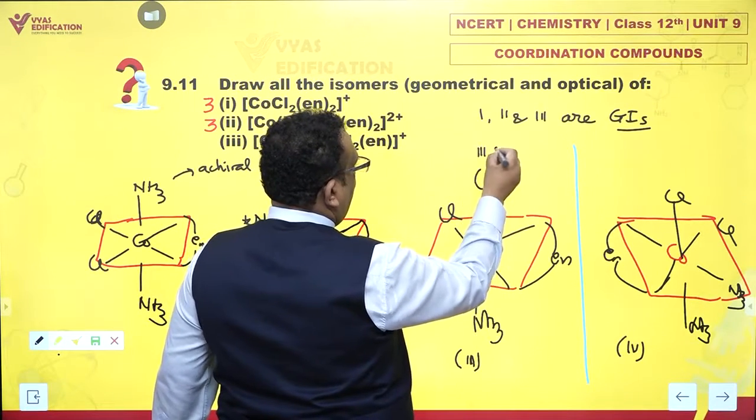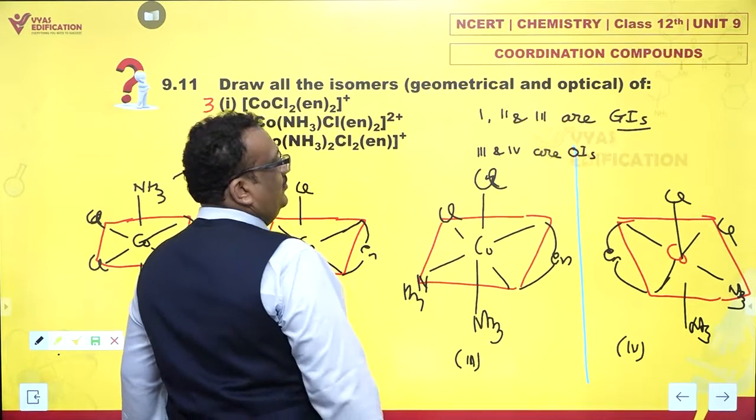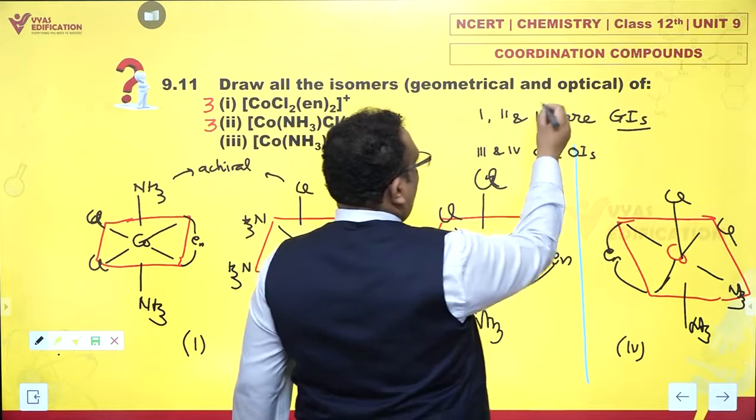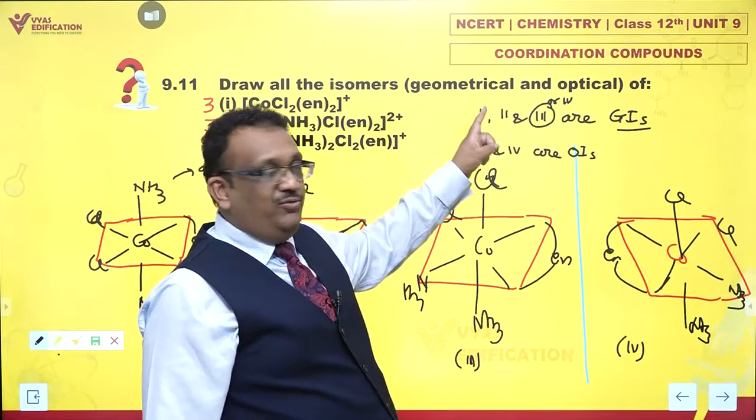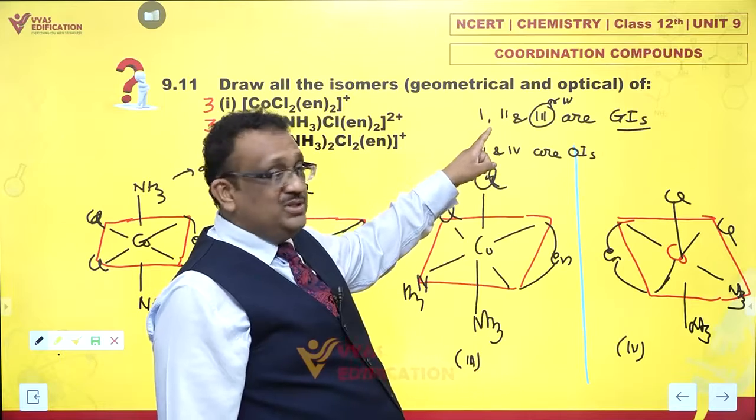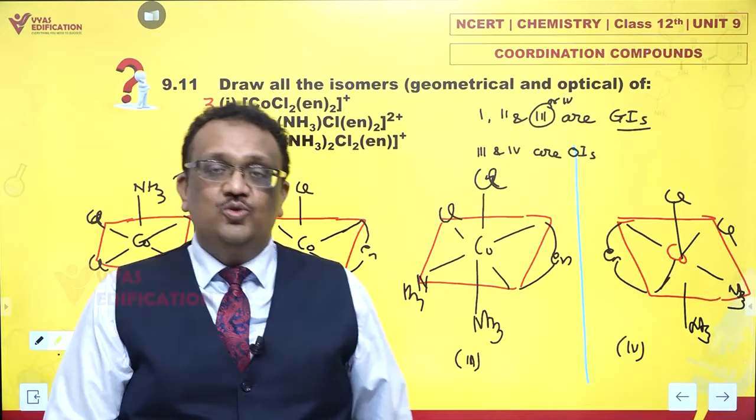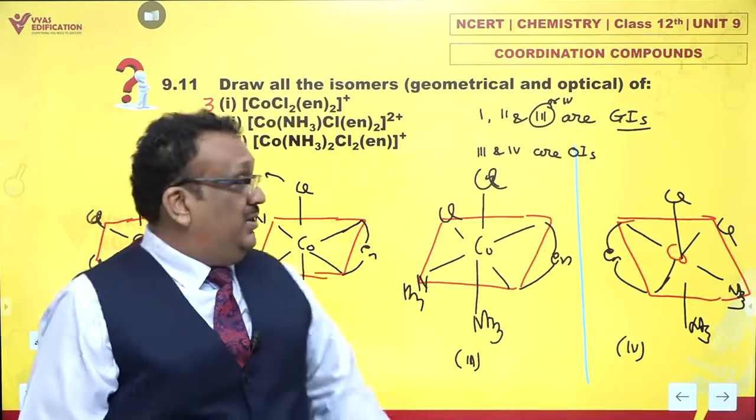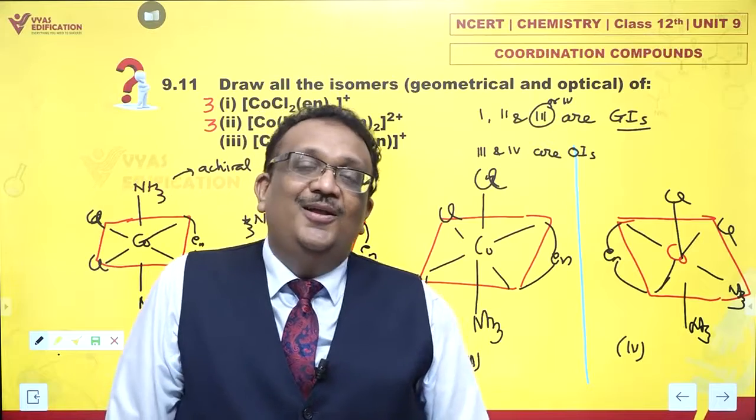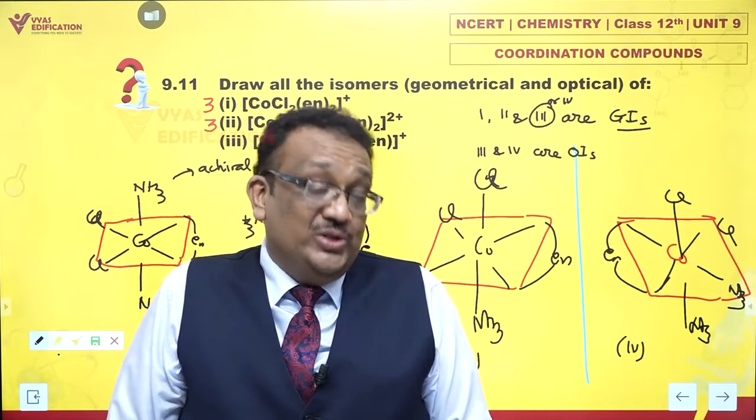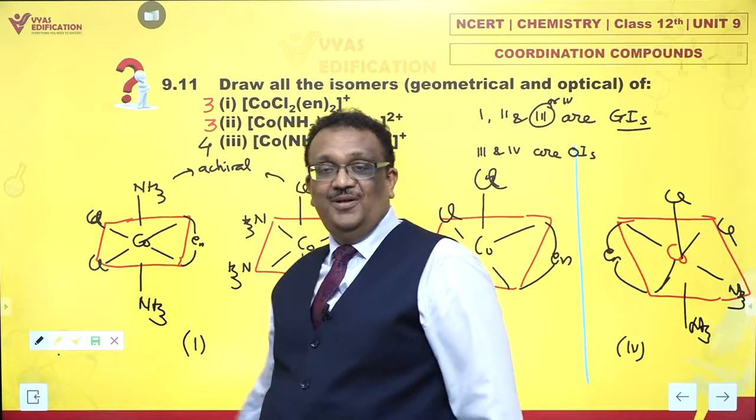Three and four are optical isomers. Instead of three, you could write four also here. One is geometrical isomer of two. One and two are geometrical isomers. Two and three, two and four, one and three, one and four are also geometrical isomers. But three and four together, if you take them just together, they are nothing but optical isomers. So in total, we have four stereoisomers in third part.